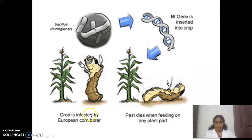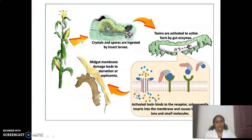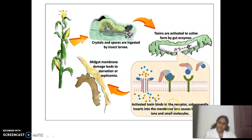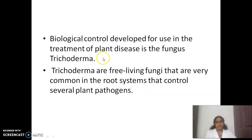When a crop infected by the European corn borer has the Bt gene inserted, the pest dies when feeding on any plant part. Another diagram explains the same process: crystals and spores are ingested by insect larvae, the toxins are activated to active form by gut enzymes, and the activated toxin binds to receptors, inserts into the membrane, causing leakage of ions and small molecules, leading to the death of the pest.